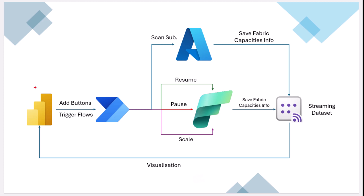Let's review the overall structure of this solution. The overall structure is to have a Power BI report with three or four different buttons to trigger some flows. Those flows will first scan an Azure subscription, find all the Microsoft Fabric capacities in that subscription, and save the required information about those Fabric capacities into a streaming dataset.